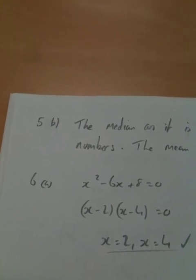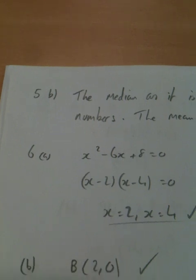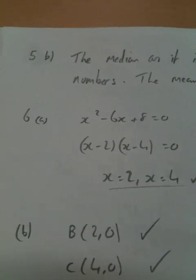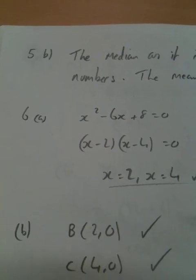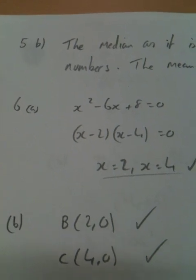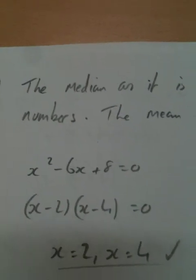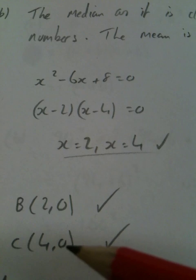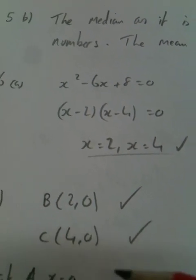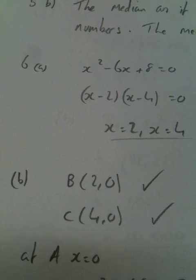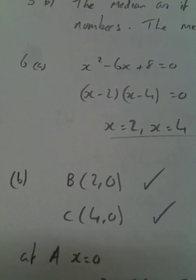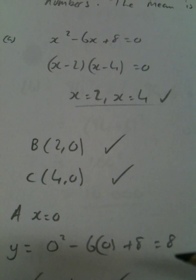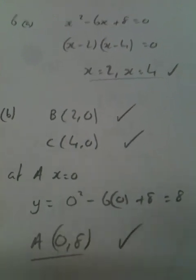On to part B. State the coordinates of the points A, B, and C. Point B and point C is where it crosses the x-axis. When we're finding the roots, we're finding out the x-coordinate of where it intersects the x-axis. So, it'll be 2, 0 and 4, 0. So, by solving this, we're finding out these two points. So, B and C, 2, 0, 4, 0. On point A, we know that the x-coordinate is 0 because it's on the y-axis. We're none along. So, we'll just put 0 into the equation. So, it'll be 0 squared minus 6 zeros plus 8. So, it'll be a height of 8 or the y-coordinate is 8. So, point A will be at 0, 8.